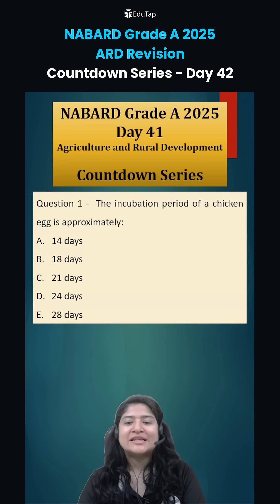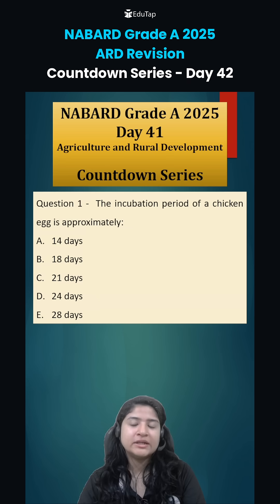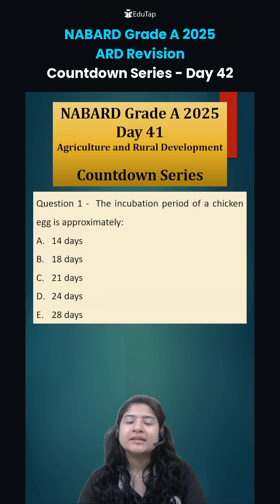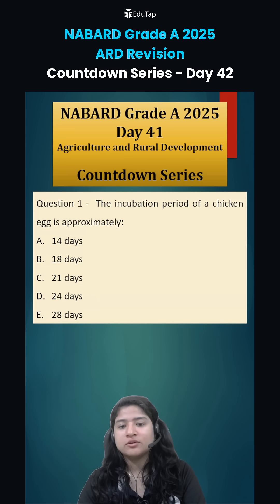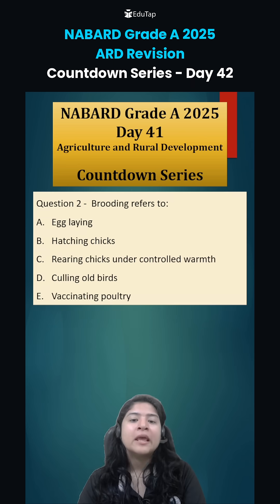Question number 1 was: the incubation period of a chicken egg is approximately? The incubation period is the time gap from when the egg is laid until the chick comes out. That is 21 days — option number C.